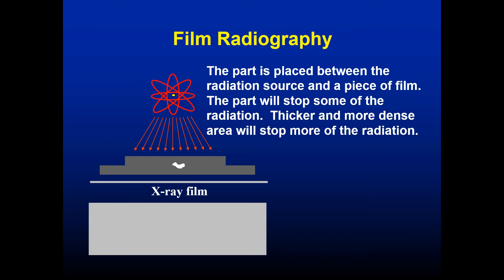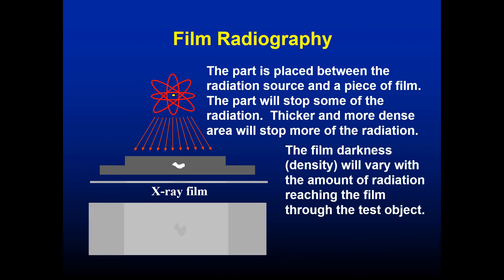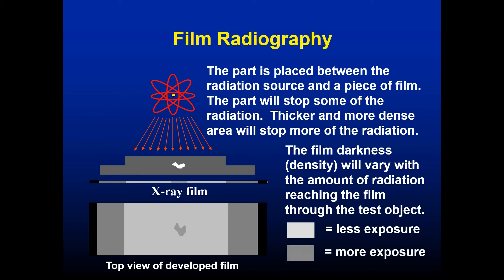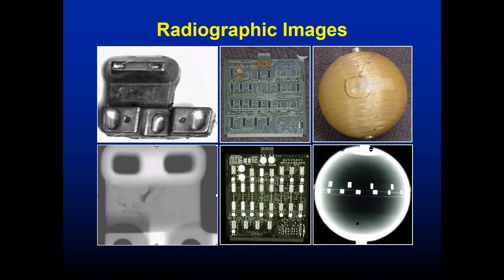Film darkness varies with the amount of radiation reaching it through the test object — lighter areas have less exposure and darker areas have more. For example, a defect such as a void in a steel plate appears darker because less material means more radiation passes through. Radiographic images of machined parts can reveal defect areas inside the part as darker regions.